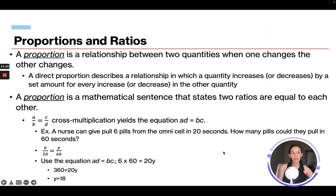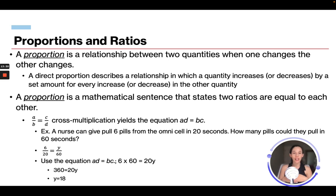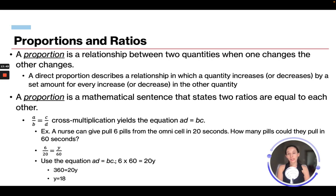A proportion is a relationship between two quantities where when one changes, the other changes. A direct proportion means a quantity increases or decreases by a set amount for every increase or decrease in the other. A proportion is a mathematical sentence stating two ratios are equal: A over B equals C over D. If you cross-multiply, you get A times D equals B times C.